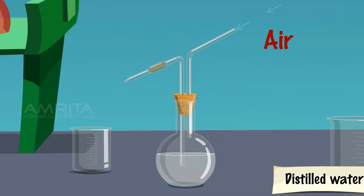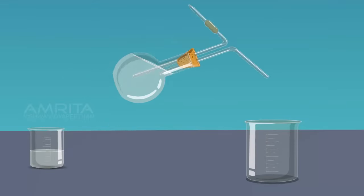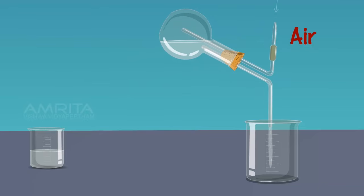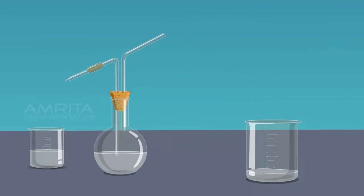On blowing out air through the tube which bends at an angle of 120 degrees, a stream of water comes out from the other tube. On tilting the flask and blowing out air through the tube which bends at an angle of 60 degrees, a little larger amount of water comes out from the other tube.